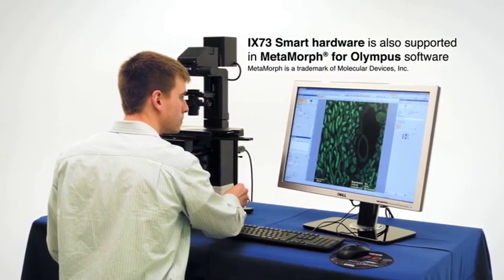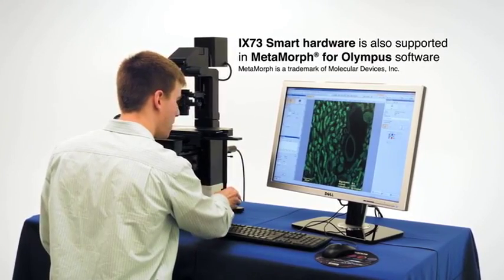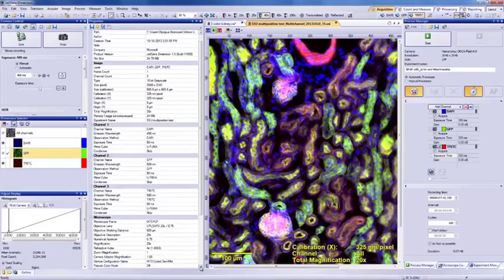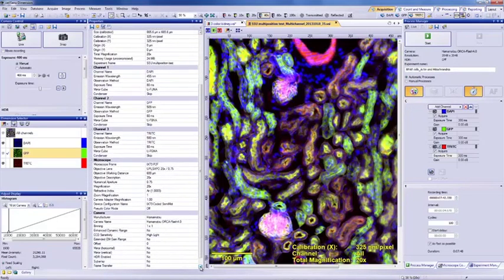The IX-73 Smart Microscope is a manual, coded configuration that knows exactly what adjustments the user has made during operation. This information is saved into the image metadata, or experimental parameters, for future analysis.